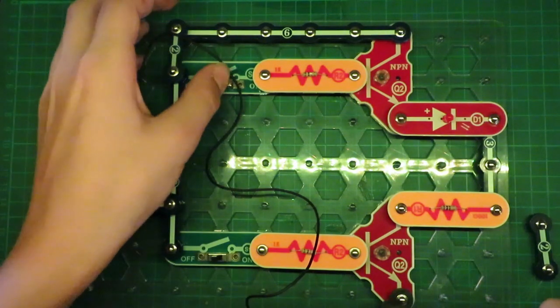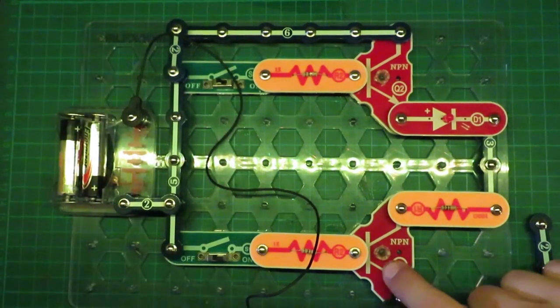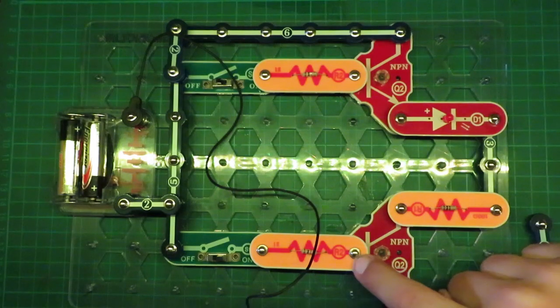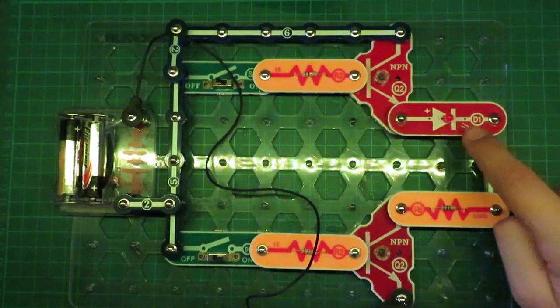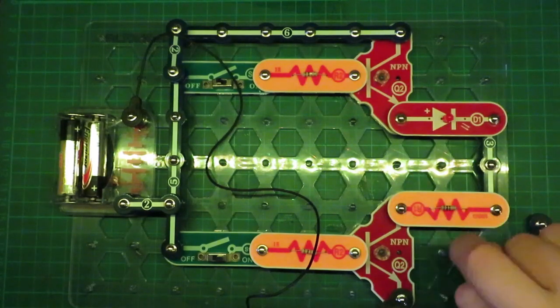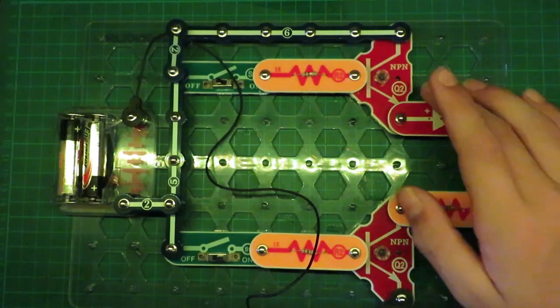Same thing, if we turn on this transistor right here, the electricity can flow from the base to the emitter, back to the negative, without lighting up the LED. And the light still doesn't turn on because this transistor is off.